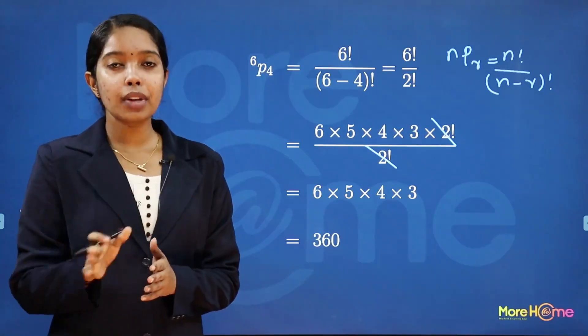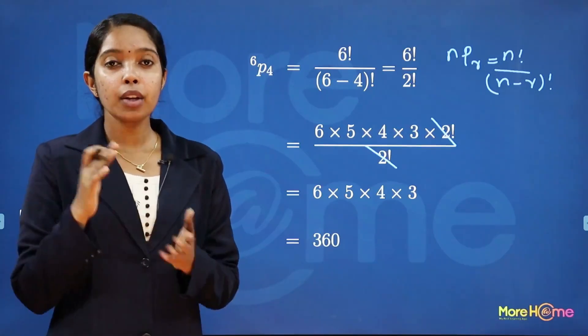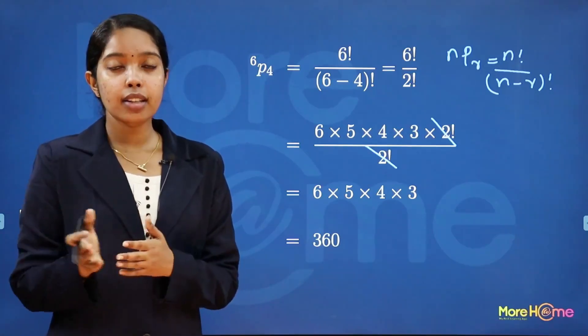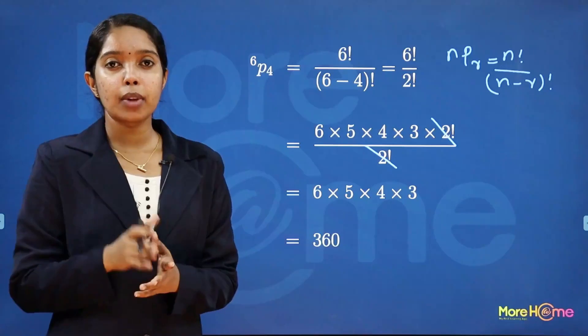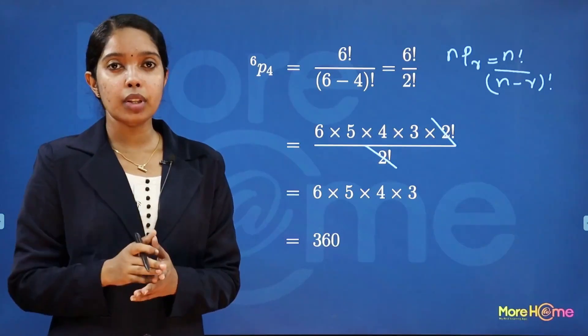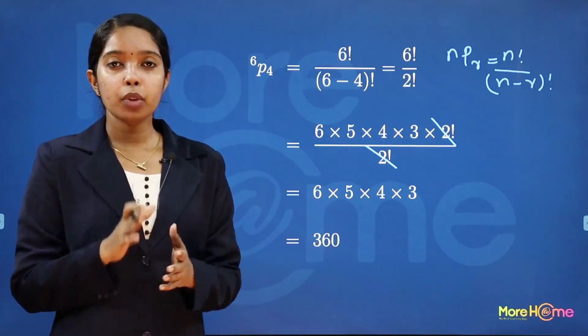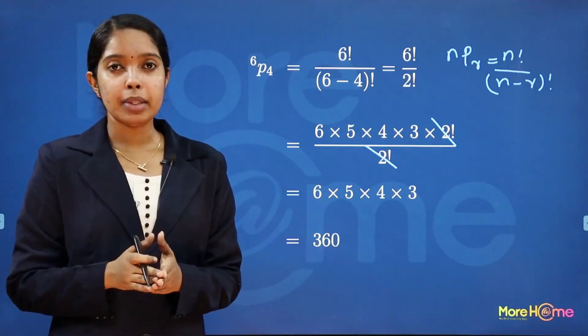So the remaining calculation gives 6 into 5 into 4 into 3, which equals 360. So 360 is the number of arrangements — the number of four-letter words that can be formed.